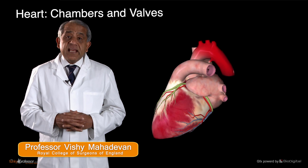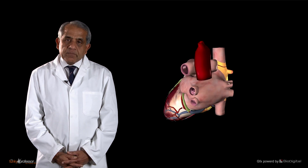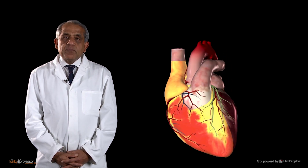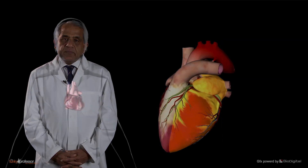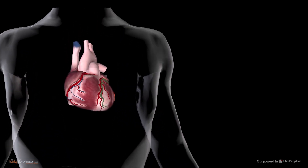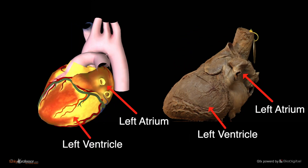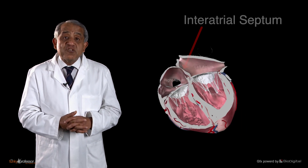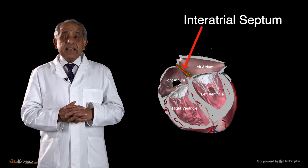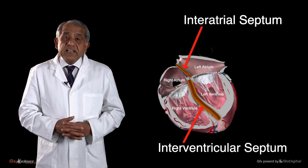Functionally, we speak of the right heart and the left heart. The right heart pumps blood into the pulmonary circulation, and the oxygenated blood from the two lungs returns to the left heart, which is subsequently pumped to the entire body. The right heart is made up of the right atrium and the right ventricle. The left heart comprises the left atrium and the left ventricle. The two atria are separated by a partition known as the interatrial septum, and the right and left ventricles are separated by the thick interventricular septum.